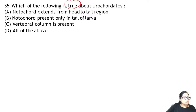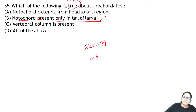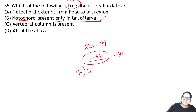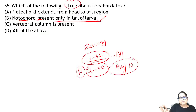Zoology Question 35: which is true about Urochordata? The notochord is present only in the larval stage. We have now completed zoology Section A from questions 1 to 35.